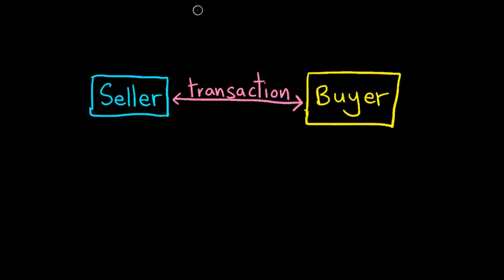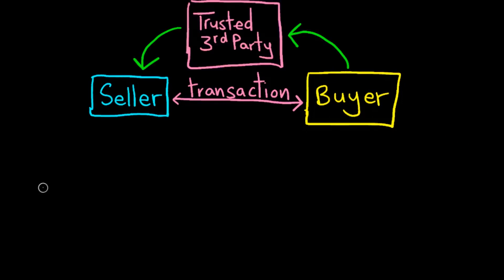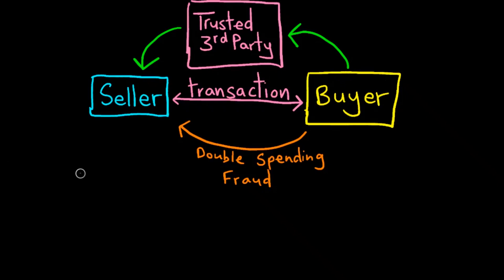Under the seller and buyer transaction, a trusted third party has been introduced because it is very easy to duplicate digital cash for the buyer — this is called the double spending problem. In other words, the trusted third party is there to protect the seller from fraud.